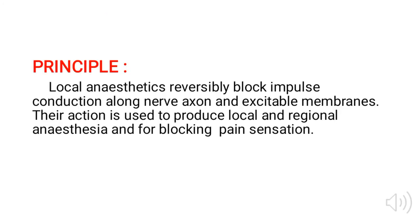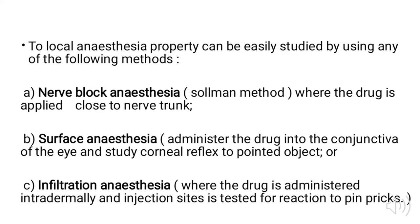Now coming to the principle of this experiment: local anesthetics reversibly block the impulse conduction along the nerves, axon, and excitable membrane. Their action is used to produce local and regional anesthesia and for blocking pain sensation. The local anesthesia property can be easily studied by using three different methods.